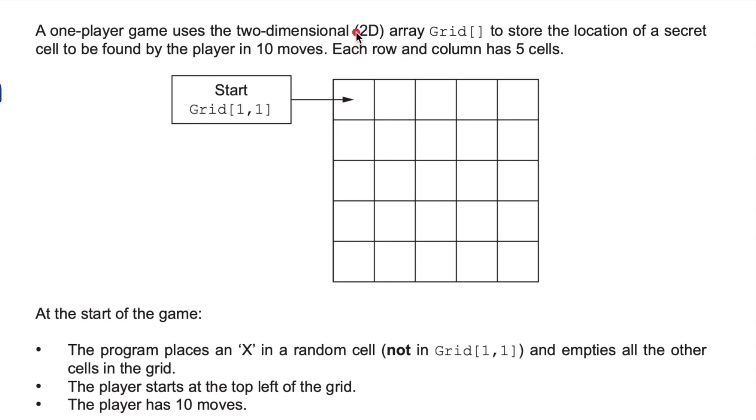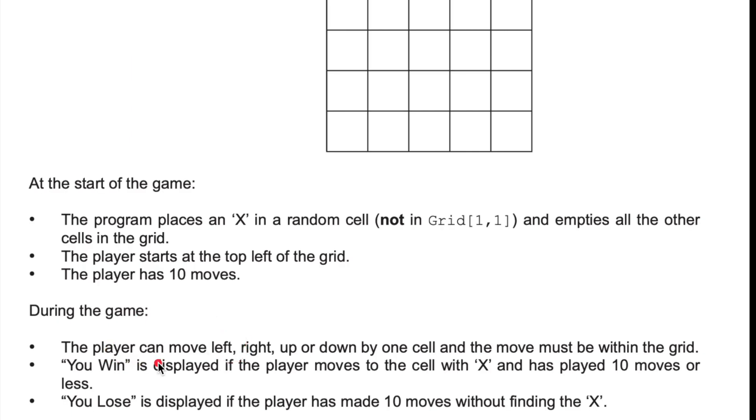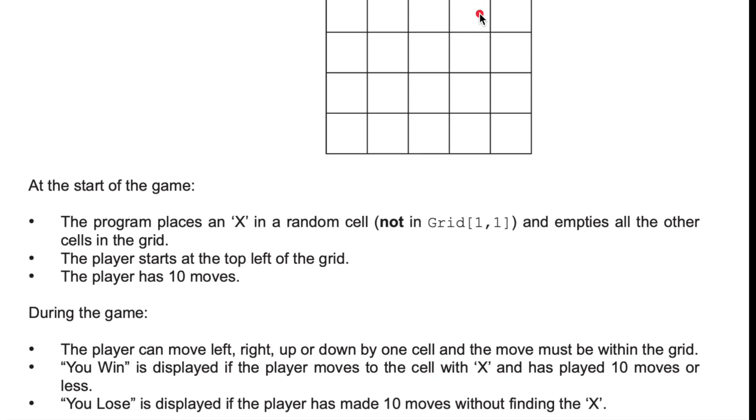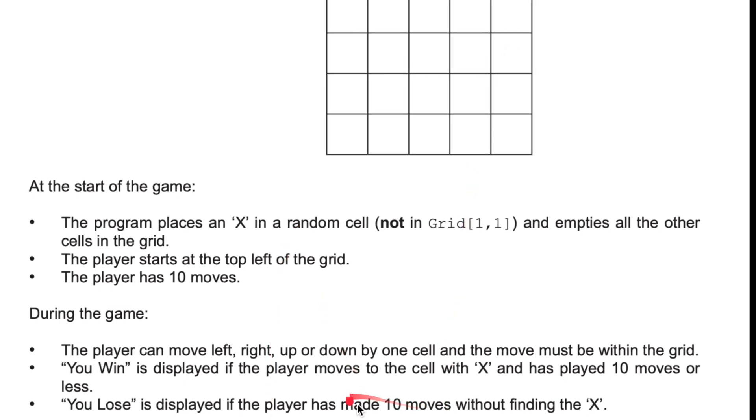The player has 10 moves. During the game, the player moves either left, right, up, or down by one cell, and moves must be within the grid. We can't go outside the grid. For example, if we're here, we can't move up and we can't move left. You win if the player moves to the cell with the X within 10 moves. But if they don't get to the X within 10 moves, they lose. A little bit like Hangman.